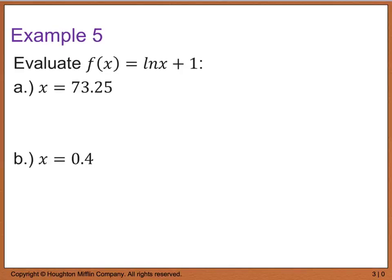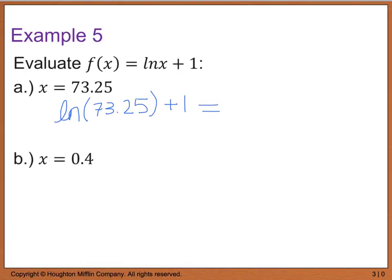For example 5, we're going to evaluate the natural log of x plus 1 when x equals 73.25. In my calculator, I'm going to type in the natural log of 73.25, close your parentheses, and then add 1. Please make sure to close that parentheses on your calculator, because there is a difference between 73.25 and 74.25, which is what your calculator would assume if you don't. When we type that in, we end up with 5.2939.